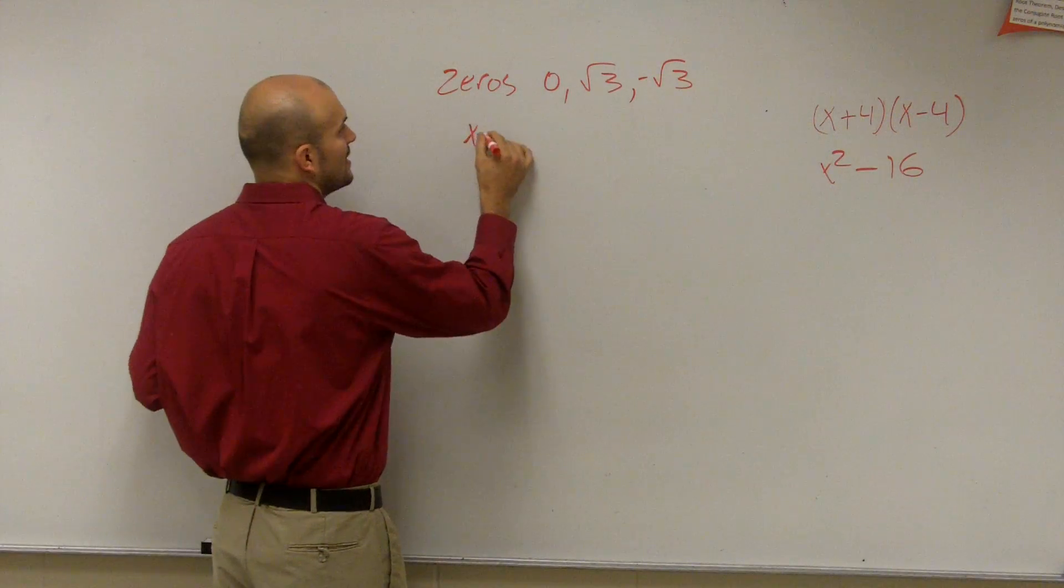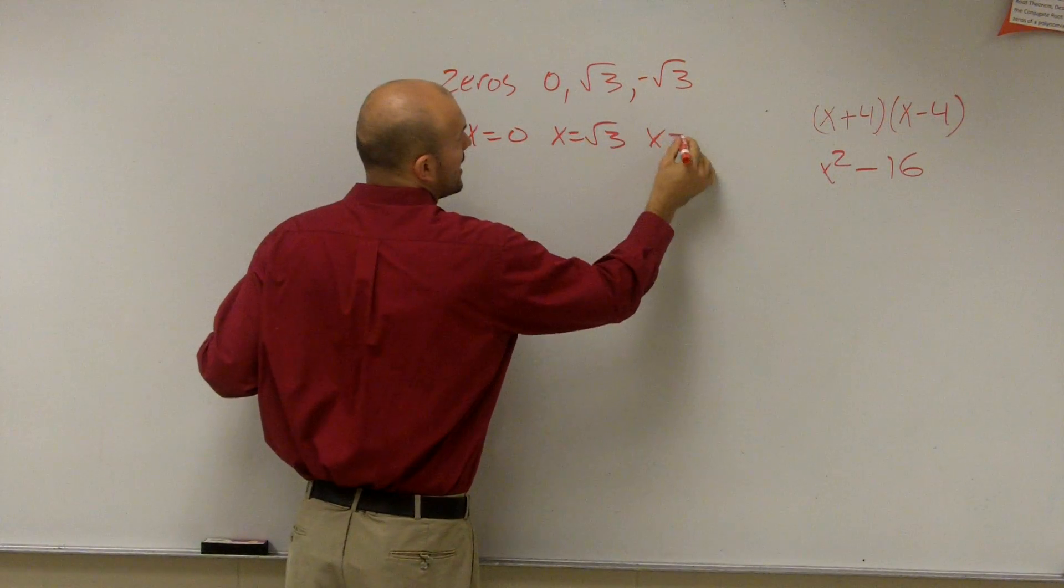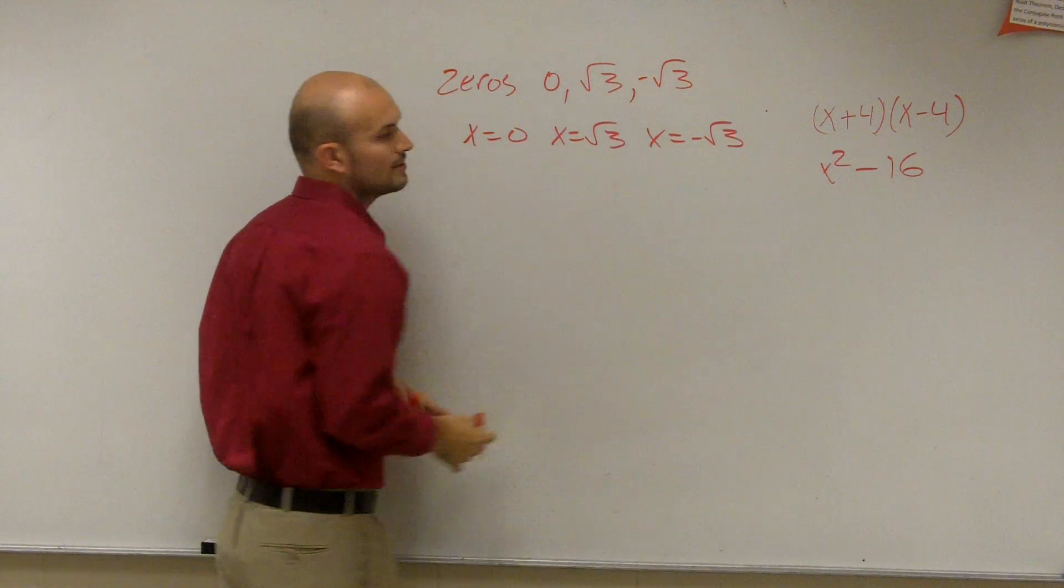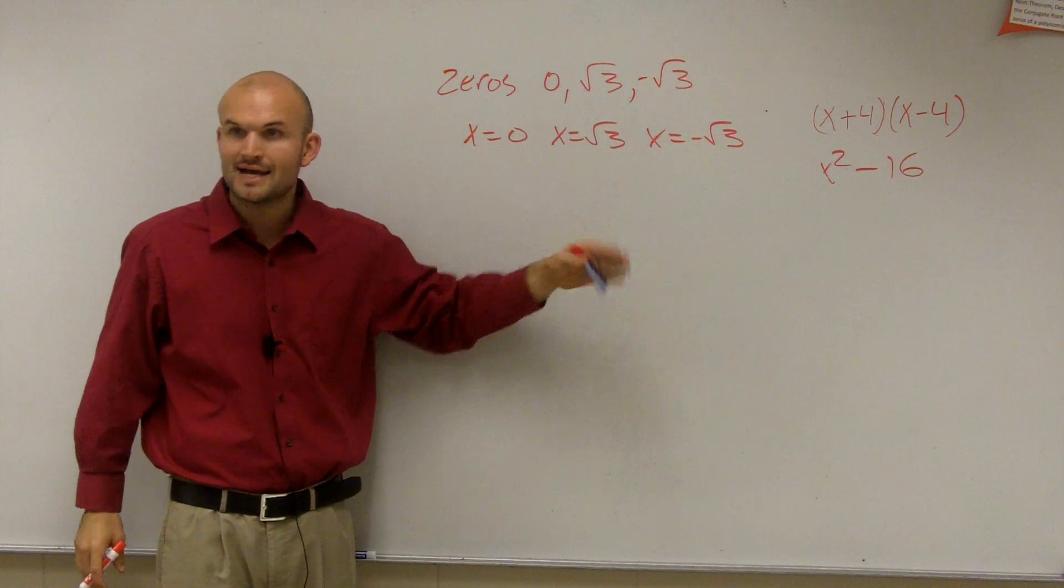We're going to do the exact same process. x equals 0, x equals square root of 3, x equals negative square root of 3. Right? They're your zeros. You set them equal to x.